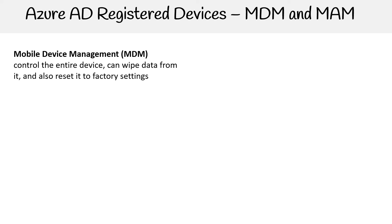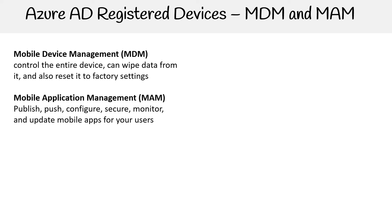The other one, mobile application management, allows you to publish, push, configure, secure, monitor, and update mobile apps for your users. So you have one where you can actually control the entire device, and then you have one at a per-app level.